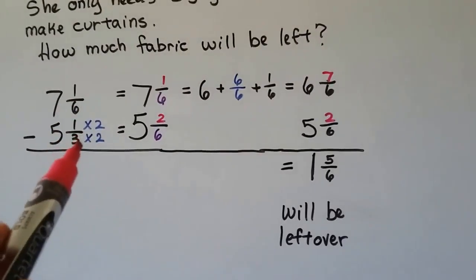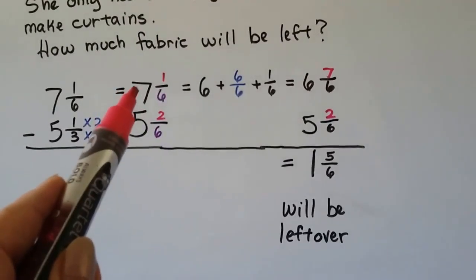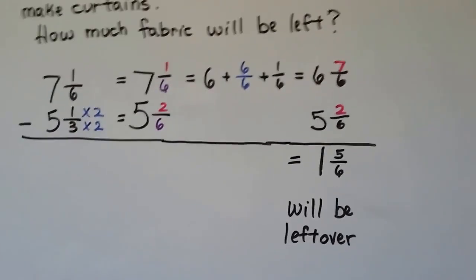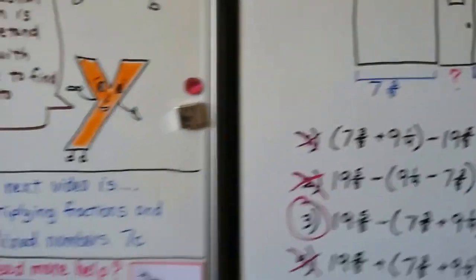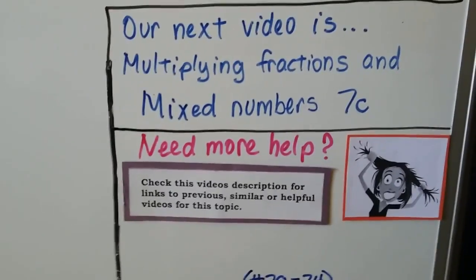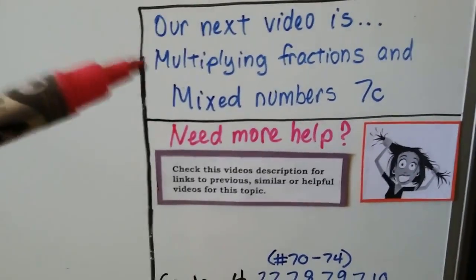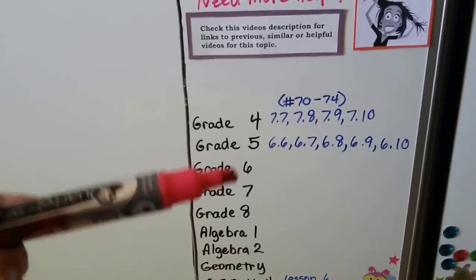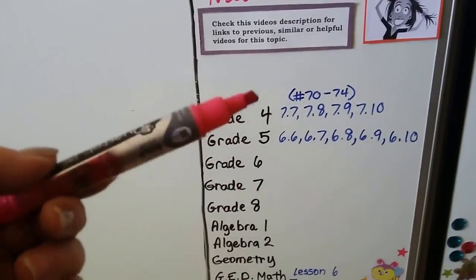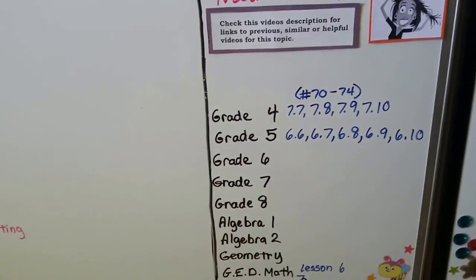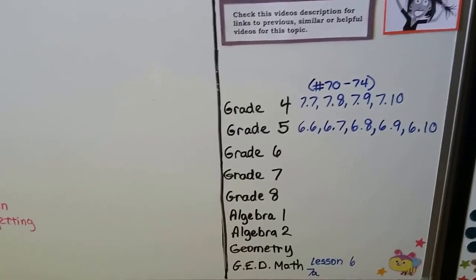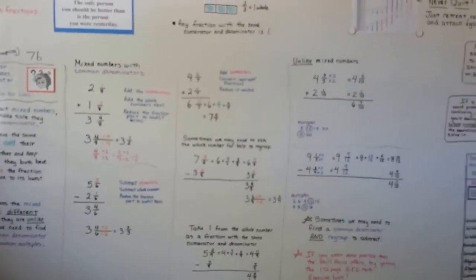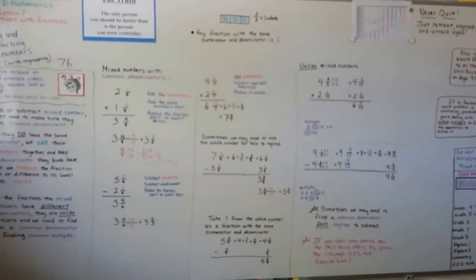A lot of little steps: we had to match the denominator first, then regroup and take one whole from the 7 as the same numerator and denominator to give it to the fraction so we could subtract. Our next video is going to be multiplying fractions and mixed numbers, so make sure you understand what you're doing so far before you move on. If you need more help, there are links in the description to videos about adding, subtracting, and regrouping with fractions and mixed numbers. I hope you do well on the skill focus and I'll see you next time.